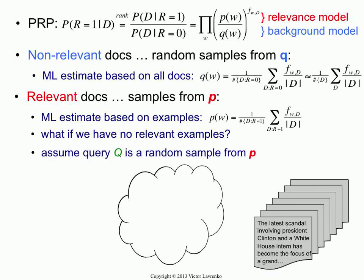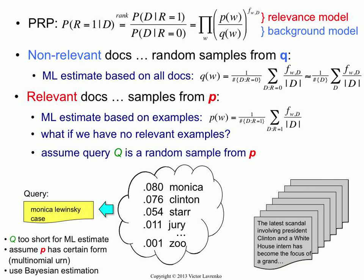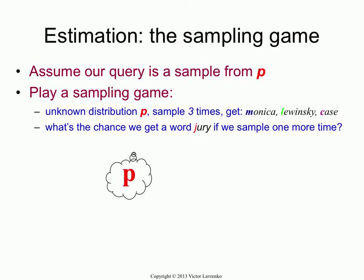What we're going to do is assume that our query is the only sample we have from this distribution. We're going to try to use the query to estimate the probabilities, the parameters, the numbers in this distribution. Think of this as one of those urns where you want to estimate the probabilities. We can't do it directly because this won't have enough counts—this will result in a degenerate model.